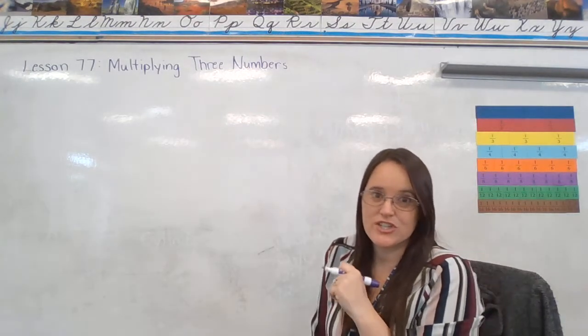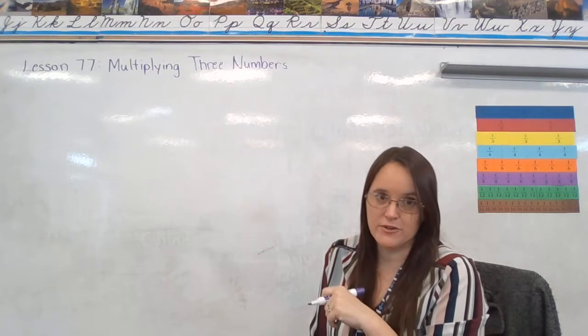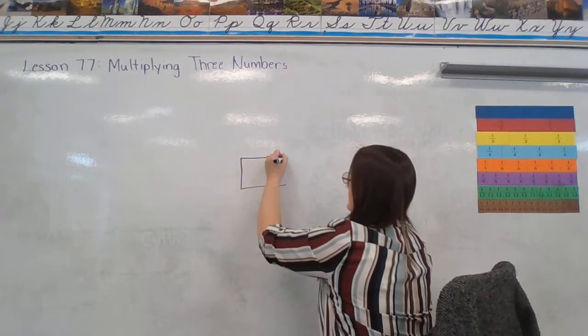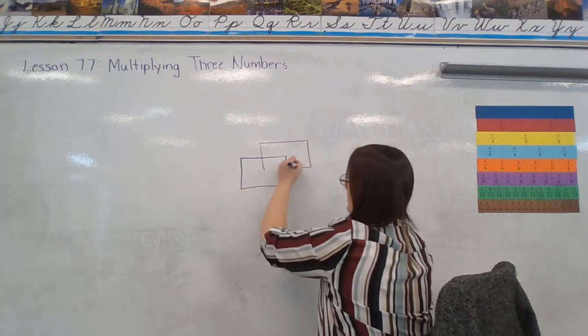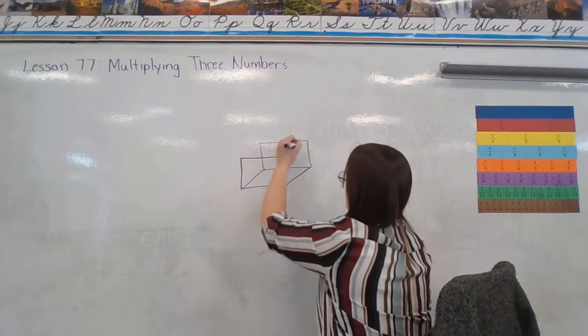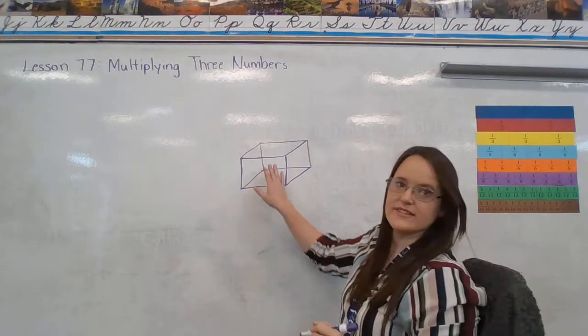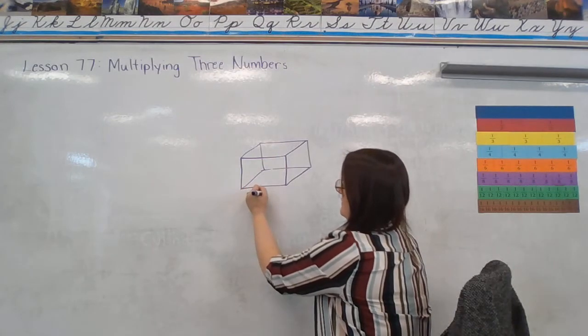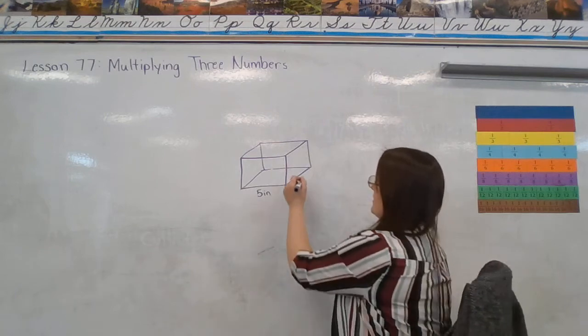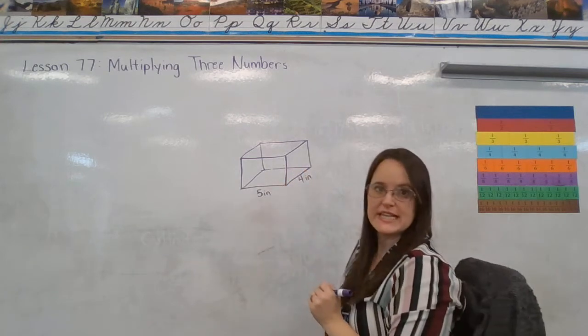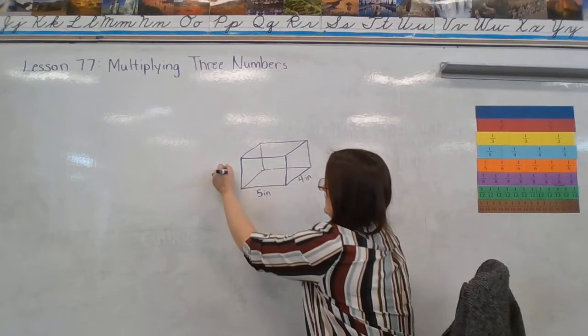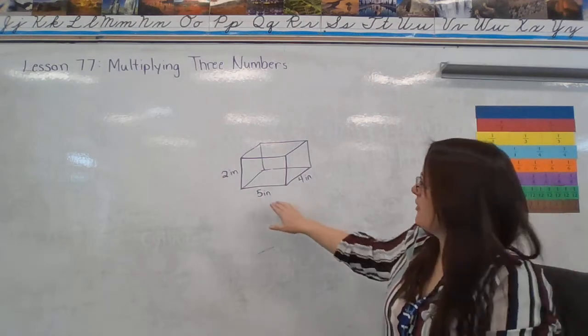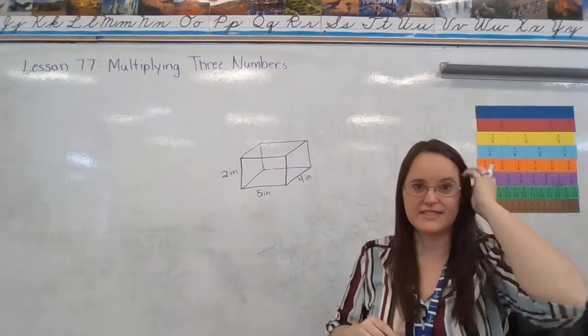So why is it important for us to know this skill? Because we are going to start to use this to find volume of rectangular prisms and of cubes. Alright, so here's my rectangular prism. I'm told that the length is 5 inches, I'm told that the width is 4 inches, and the height is 2 inches. Okay, so I have my three important pieces of information.